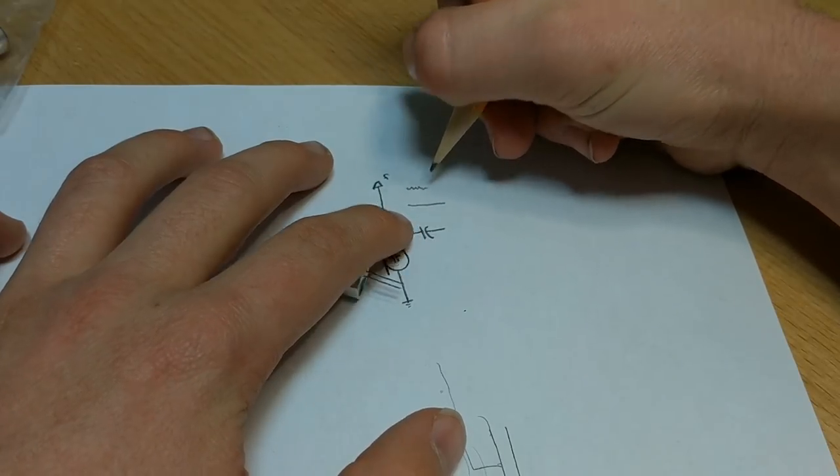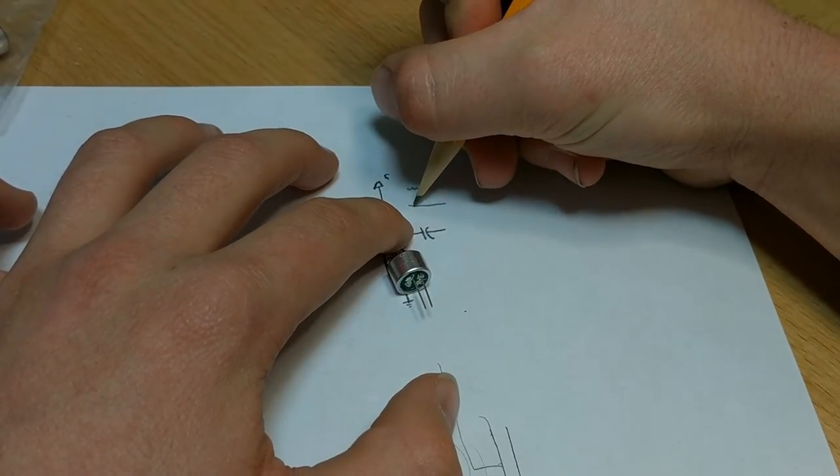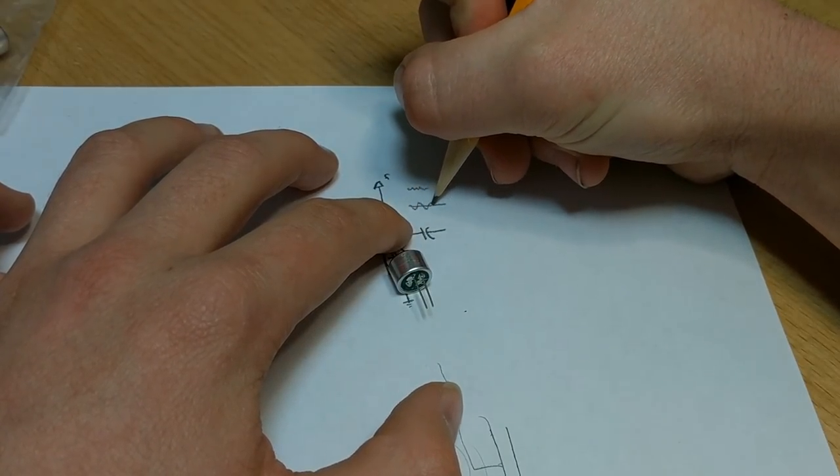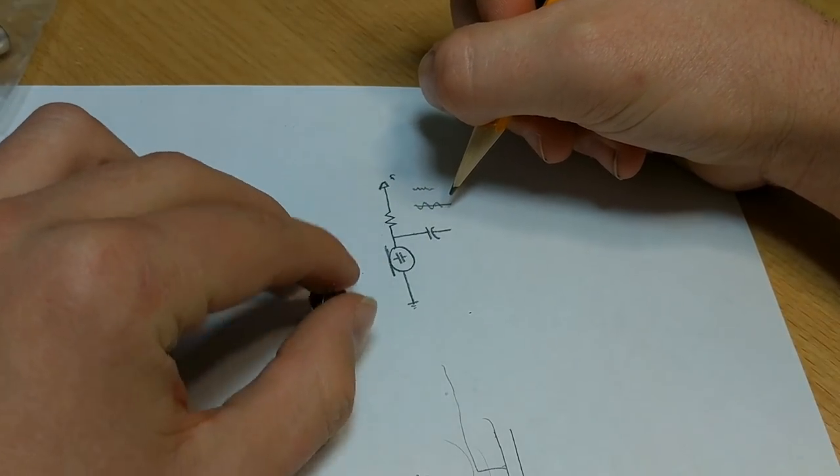But we don't want that because that's not good. And so we put this DC blocking capacitor, and that moves this audio waveform down around the zero point. And so we have a nice looking audio waveform on there.